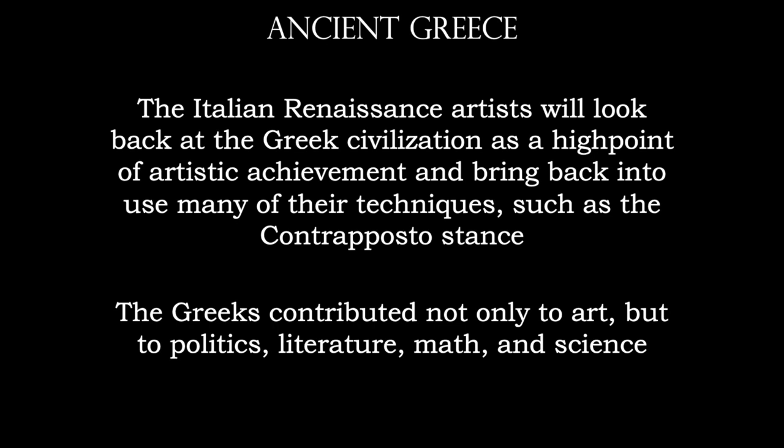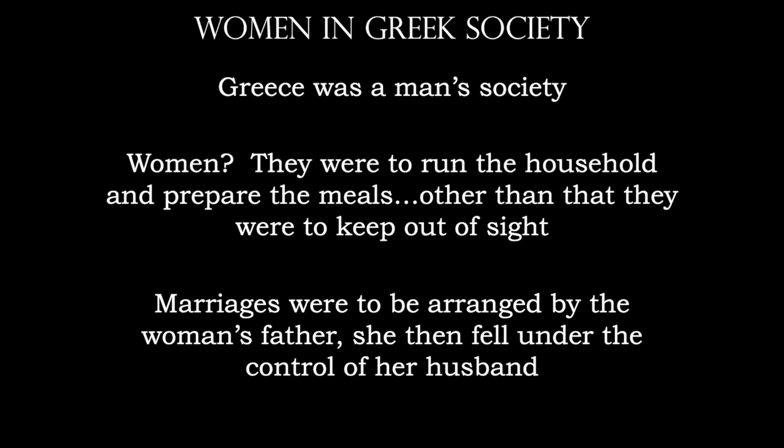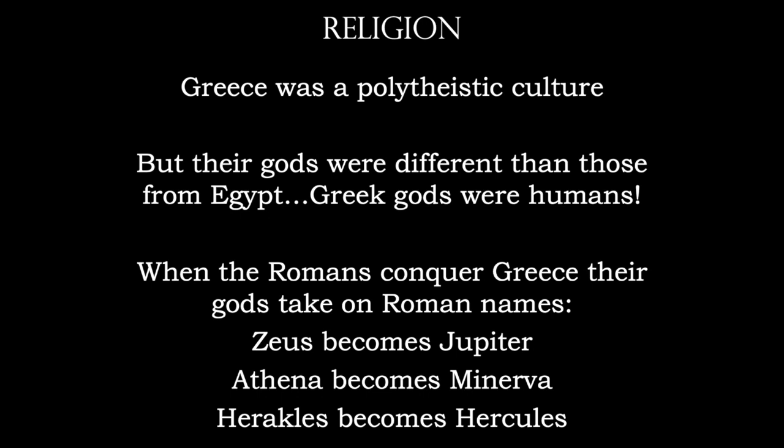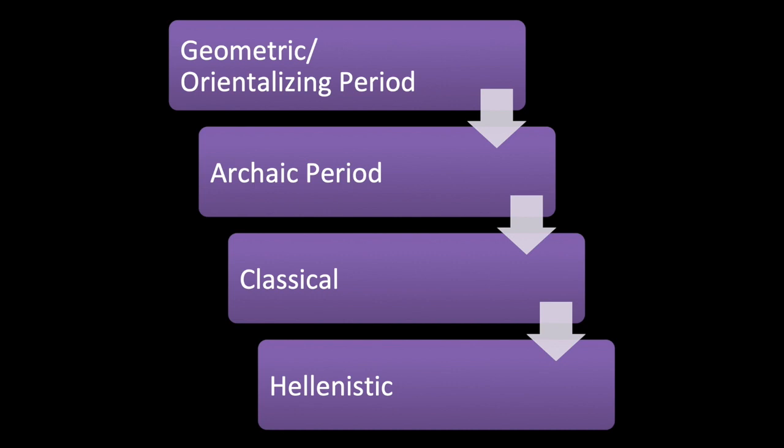The Greeks not only contribute to art, but also politics, literature, math, and science. It was definitely a man's society — women were there to run the household, marriages were arranged by the woman's father, and she would fall under control of her husband. Greece was also a polytheistic culture with gods taking human form. We did an exercise in class covering 15 of the most important gods; when the Romans conquered Greece, the same gods appeared with different names. We have four distinct periods: the geometric or orientalizing period, the archaic period, classical, and Hellenistic.